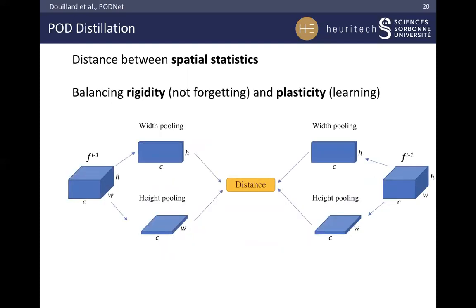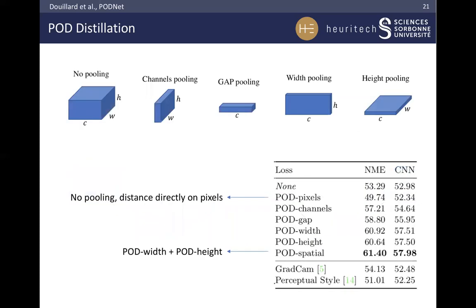We do not enforce spatial features to be identical, but rather to keep similar spatial statistics, allowing us to balance rigidity with plasticity. Instead of constraining every pixel, we extract statistics from the feature maps. We found empirically the best statistics were along the pixel distribution, along the horizontal and vertical axis. We evaluated our loss with different kinds of statistics. Constraining on statistics rather than pixels gave better results in all cases.